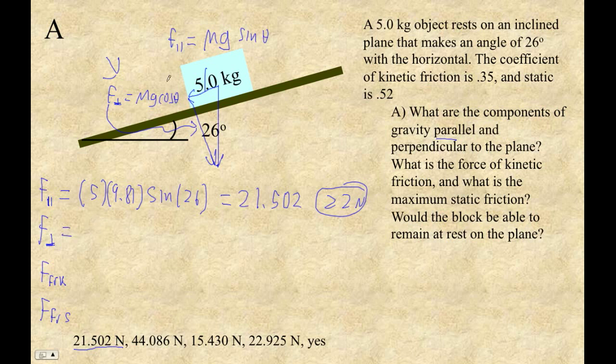The perpendicular force is going to be, since it's the adjacent side, these two angles here are congruent, so since it's the adjacent side, 5 times 9.81 times the cos of 26. So I'm going to go second entry, change the sine to a cos. And that's 44.0858. So it's 44.086. And with two sig figs, we'd have to say just 44 newtons. But we would use this value to calculate the next values there.